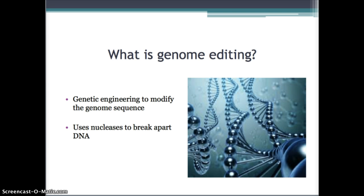This is done by causing a DNA double-stranded break at a specific location in the genome by using artificially made nucleases and then using the cell's endogenous mechanisms to repair the induced break by natural processes. The most common nucleases used are the zinc finger nucleases, transcription activator-like effector nucleases, and the CRISPR-Cas system.